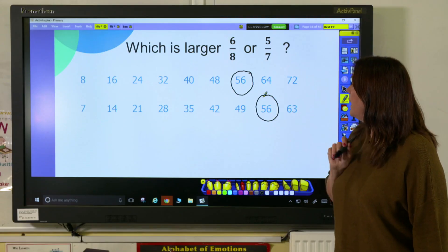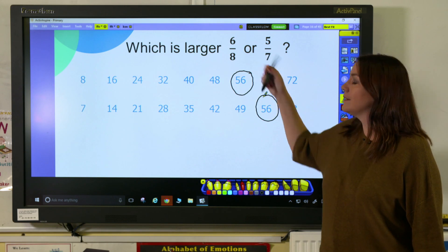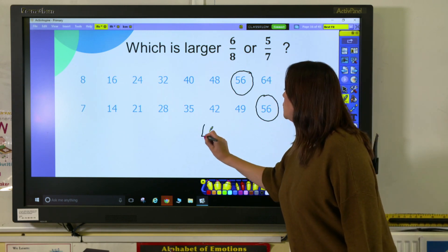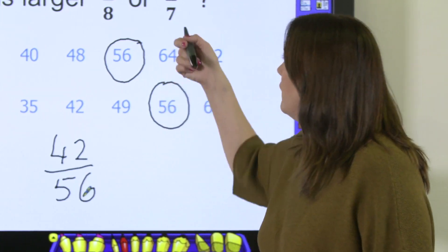So we have 6/8. I've multiplied the denominator by 7, so I need to do 6 times 7, which would be 42/56.